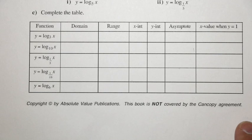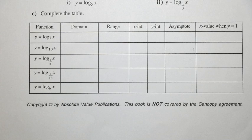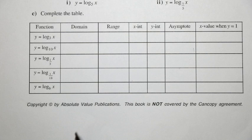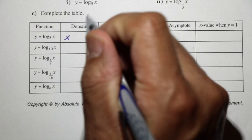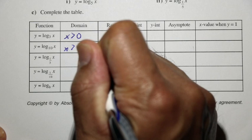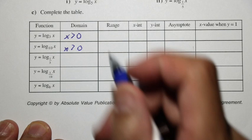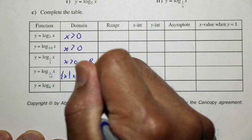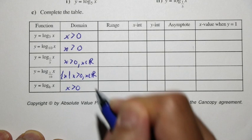Let's complete this table. We have these functions along the side and we're going to determine the domain, range, x-intercepts, y-intercepts, asymptote, and the x value when y equals 1. For the domain, x is going to be any positive number — x is greater than 0. In set notation: x such that x is greater than 0 and x is any real number. And x is greater than 0 in all of these cases.